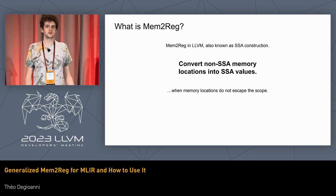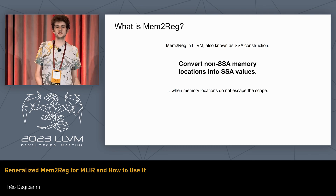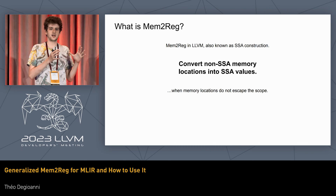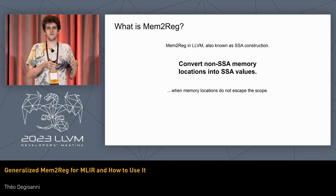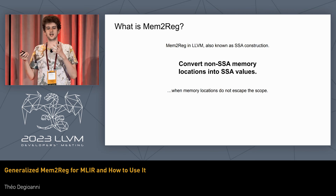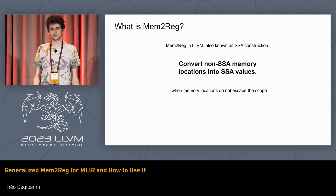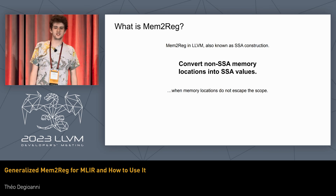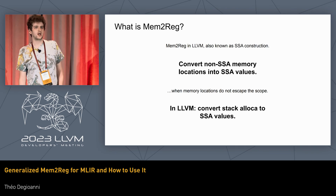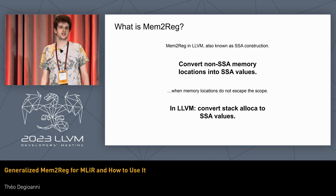Mem2Reg — that's how it's called in LLVM — is also known as SSA construction. Basically it's the transformation that takes a program that stores values in memory in a non-SSA way and turns those memory locations into SSA values, when those memory locations are tractable. In practice in LLVM, it's really just about converting alloca on the stack into SSA values.